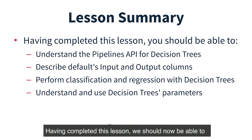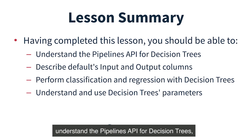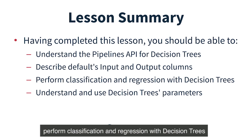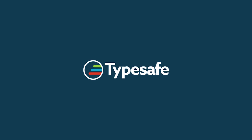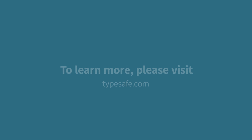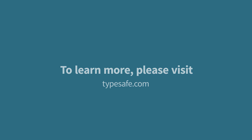Having completed this lesson, we should now be able to understand the Pipelines API for decision trees, describe pipelines input and output columns, perform classification and regression with decision trees, and understand and use decision trees parameters.